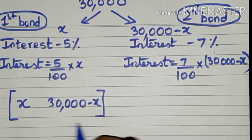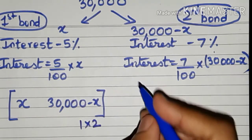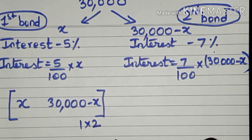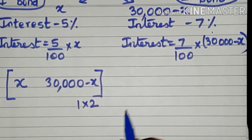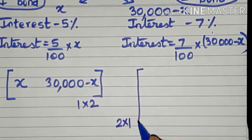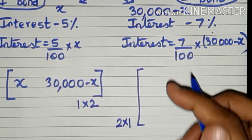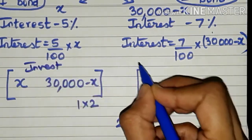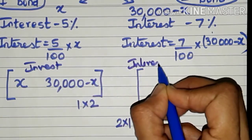The investment matrix is of order 1 by 2. For matrix multiplication the number of columns of the first matrix should equal the number of rows of the second matrix, so the second matrix should have two rows. It is better to have one column, so the interest matrix will have two rows and one column. This is the investment matrix and next to it is the interest matrix.